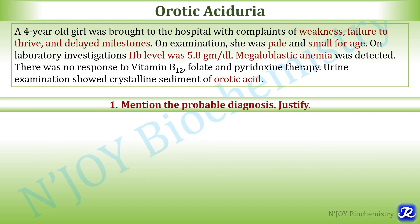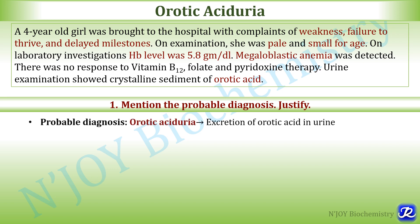The first question is: mention the probable diagnosis and justify it. The probable diagnosis is orotic aciduria — excretion of orotic acid in urine. To justify this, we have to write the various key features of this condition. Whenever you write any justification for a clinical condition, you have to mention the key features given in the clinical case scenario as well as key features from laboratory investigation and examination.